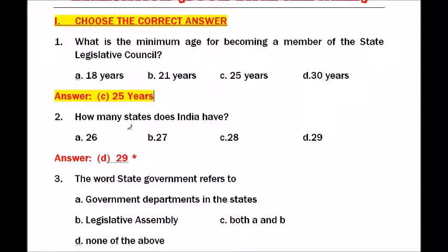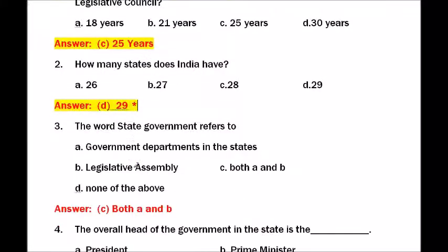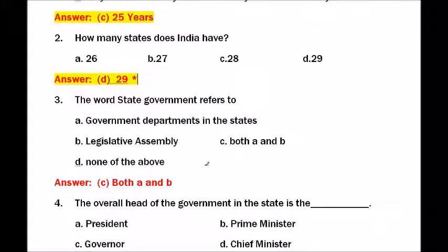Question number two — how many states does India have? Options are 26, 27, 28, 29. The answer is 29 (the states may vary). Question number three — the word 'state government' refers to government departments in the state, legislative assembly, both A and B, or none of the above. The answer is both A and B.